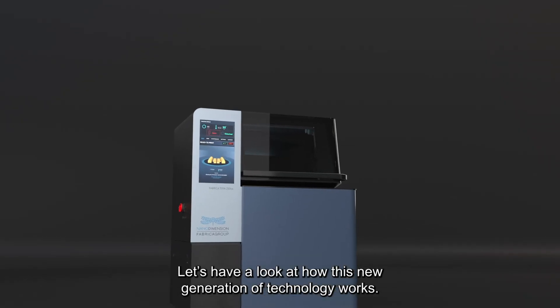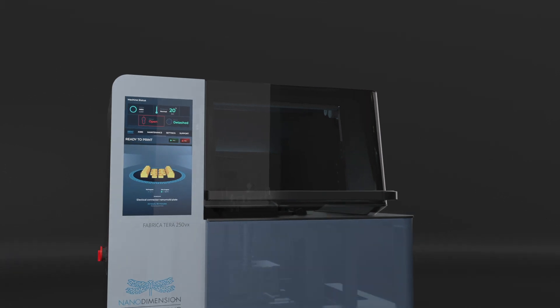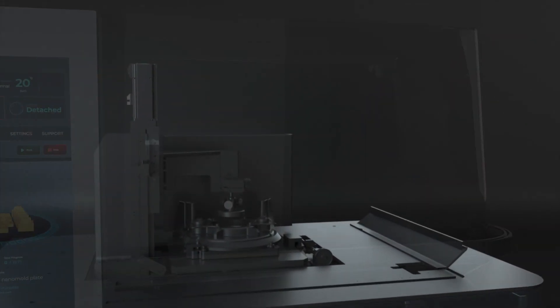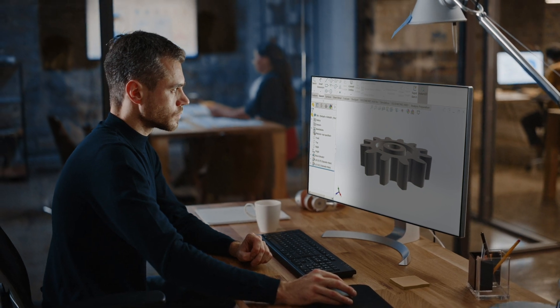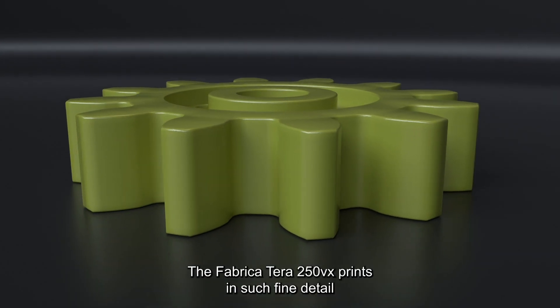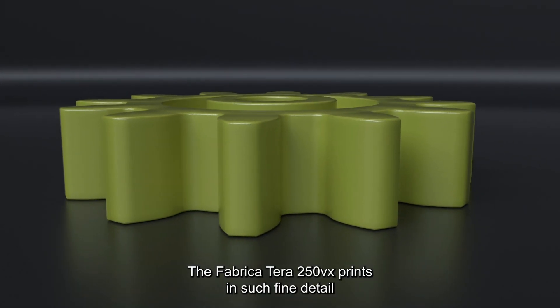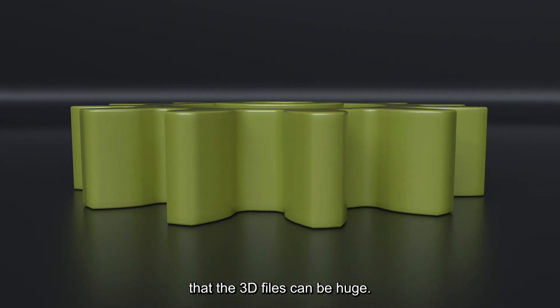Let's have a look at how this new generation of technology works. A standard 3D file is sent to the system. The Fabrica Terra 250 VX prints in such fine detail that the 3D files can be huge.